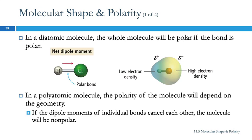Electrons are kind of unpredictable and squirrely, so they remind me of little boys. This is the home of the hydrogen family and this is the home of the chlorine family, and they each have a son that's going to go out and play.